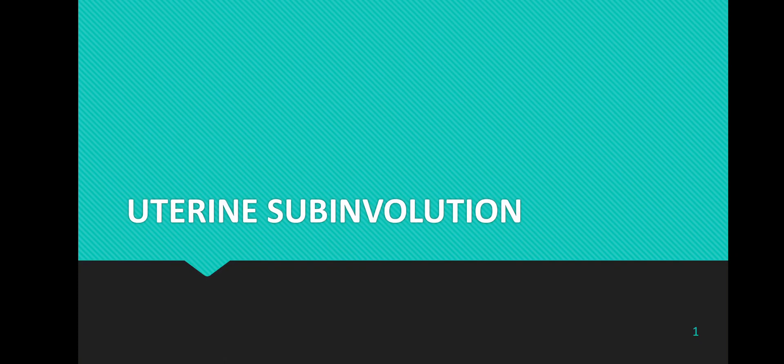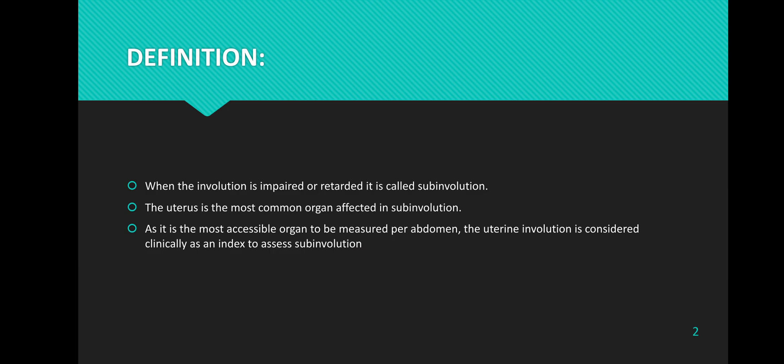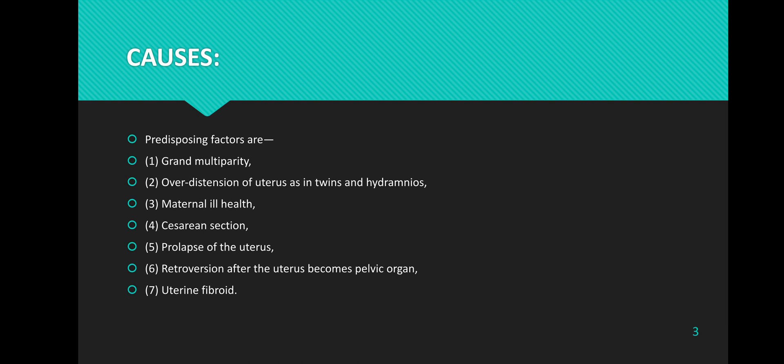Hello everyone, today we'll be talking about uterine sub-involution. When the involution of the uterus is impaired or retarded, that is what we refer to as uterine sub-involution. The uterus is the most common organ affected in sub-involution, as it is the most accessible organ to be measured abdominally. Uterine involution is considered clinically as an index to assess sub-involution.